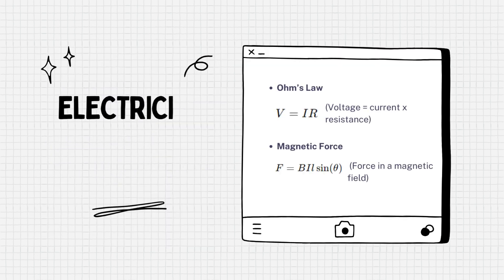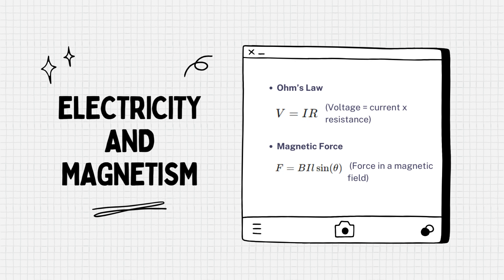Electricity and magnetism. Voltage equals current times resistance. Magnetic force.